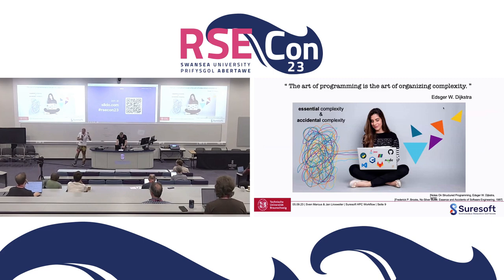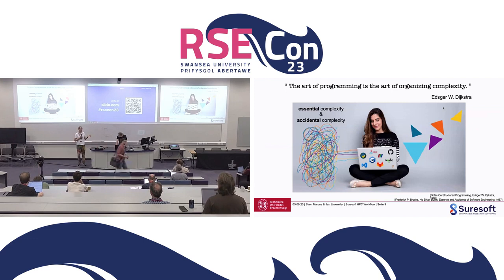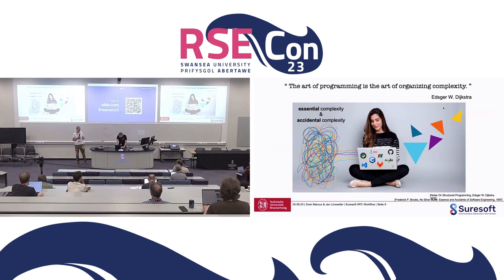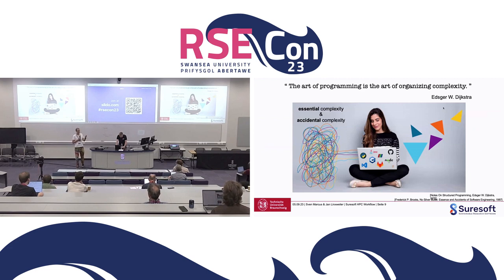So our task as an RSE, from the highest level of abstraction, is probably to deal with complexity. And due to Moore's law, there is nowadays a lot of complexity we have to deal with. Frederick Brooks divides complexity into two parts. There's the essential part that comes from the research problem we try to solve, and this is something we cannot get rid of by any means — we have to deal with it ourselves.